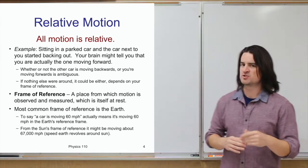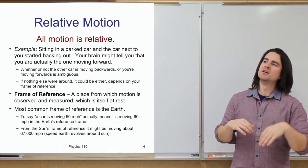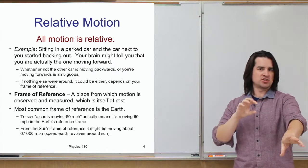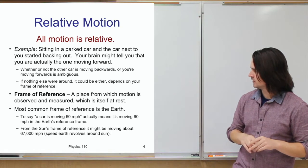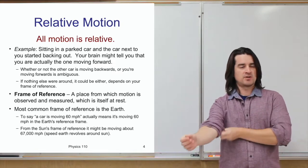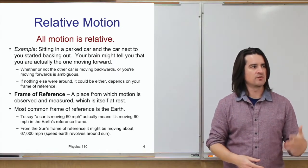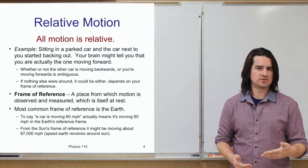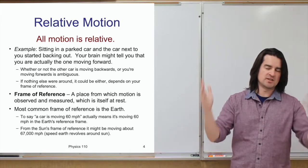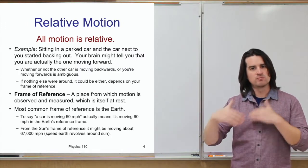A reference frame is like imagining yourself sitting and observing something — whether you're stationary or moving — or like a camera in some position watching something. The most common reference frame we use is the reference frame of the Earth's surface. When you say a car is moving at 60 miles per hour north, you're really saying it's moving at 60 miles per hour relative to the surface of the Earth.